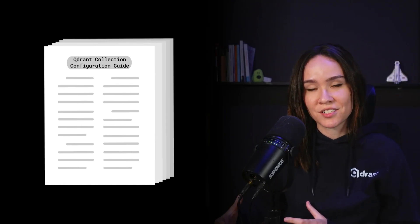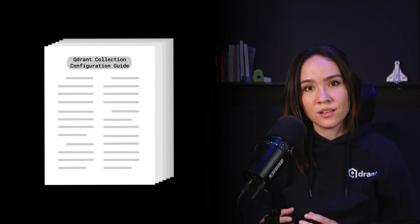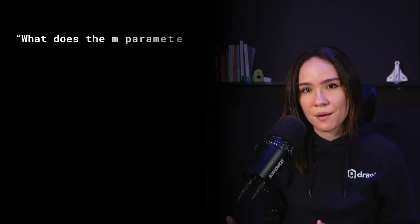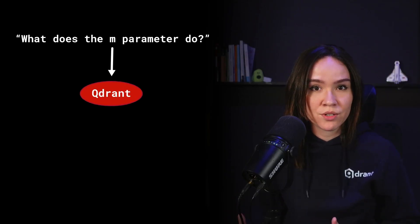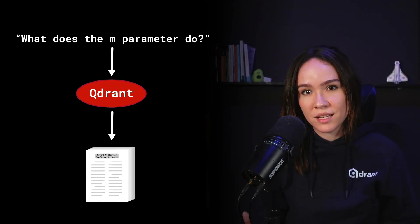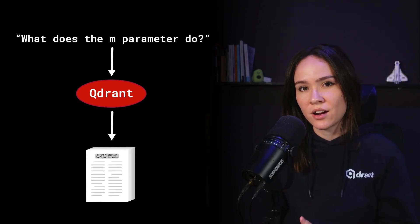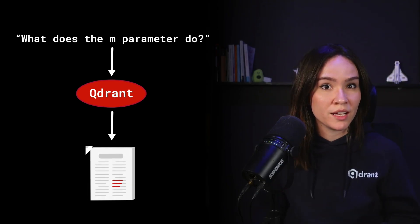Storing an entire document as a single vector might seem easier, but it's much less precise. Imagine storing the entire Qdrant Collection configuration guide into a single embedding. That article includes a lot of things, such as HNSW tuning and quantization and sharding and so on — concepts that we're going to see later on. But if a user asks, for example, what does the m parameter do? Then the retriever will give back the entire document instead of the specific section the user is asking about. The answer is there, but it's buried on top of a lot of unrelated context.